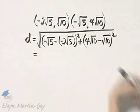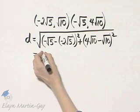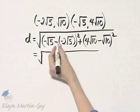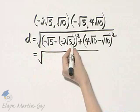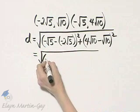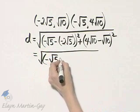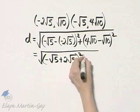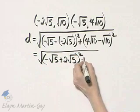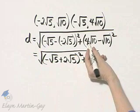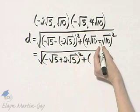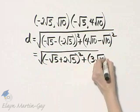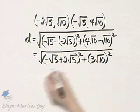Now let's start simplifying. That is the square root of: negative square root of 5 plus 2 square root of 5, that quantity squared, plus — what is 4 square root of 10 minus 1 square root of 10? That's 3 square root of 10, and that is squared.